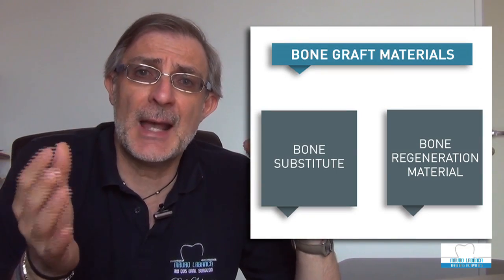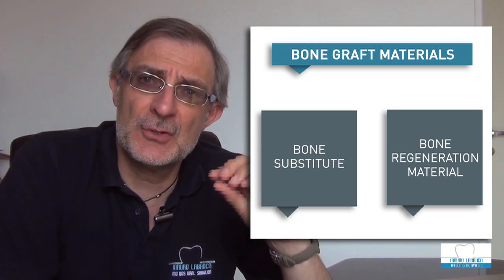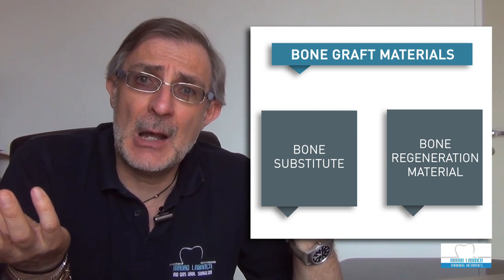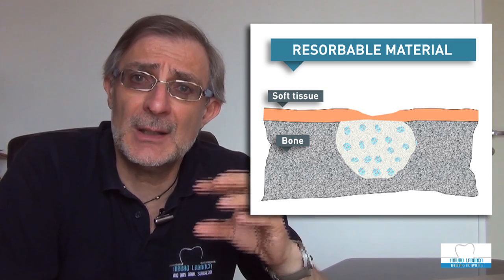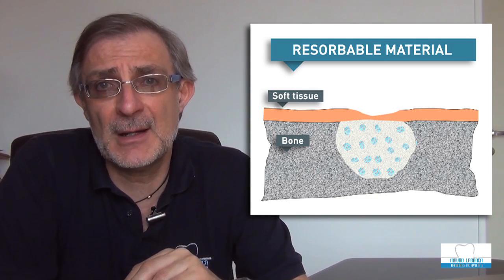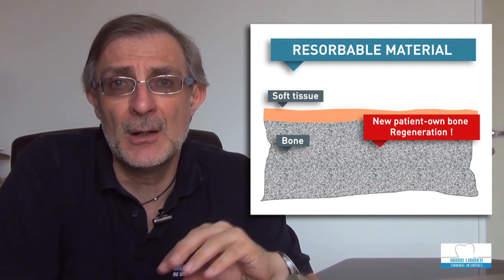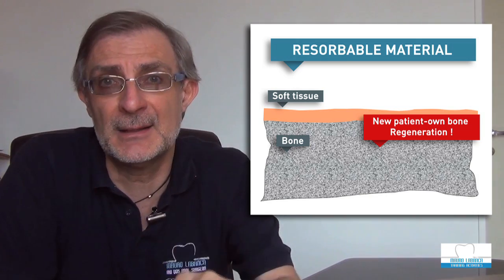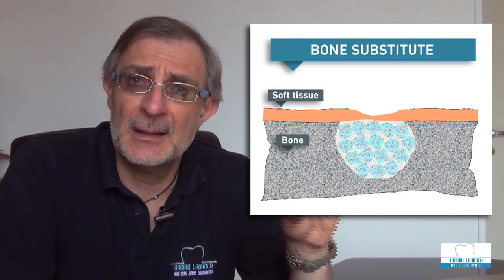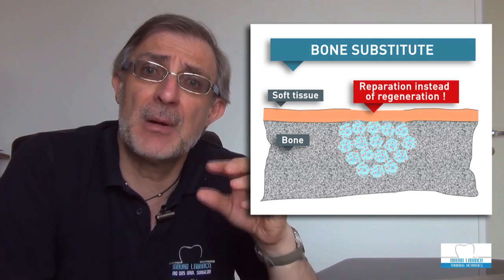One group can be considered a bone substitute, the other group can be defined as a bone regenerative material. The difference between those two groups is how they are resorbable. If they are totally resorbable, they can be considered as regenerative biomaterials, because at the end of the healing process we will not find anymore the biomaterial that was implanted. If we have a non-resorbable biomaterial, that can be considered as a bone substitute and the final result will always be a reparation.